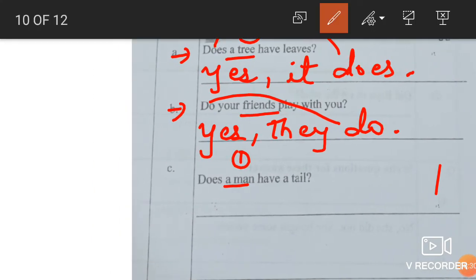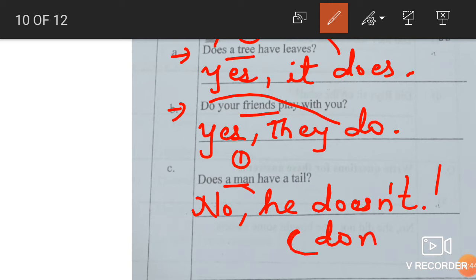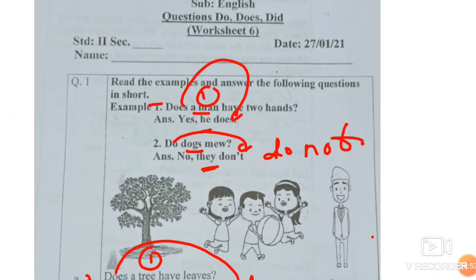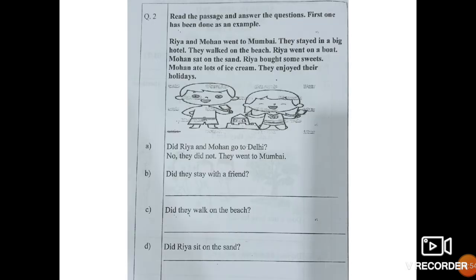Does a man have a tail. No. A man, one. No, he. Does will become doesn't. This is a short form. And another doesn't means no, he does not. Doesn't and does not is same thing.